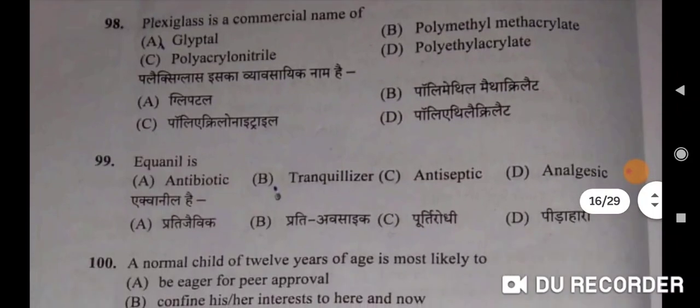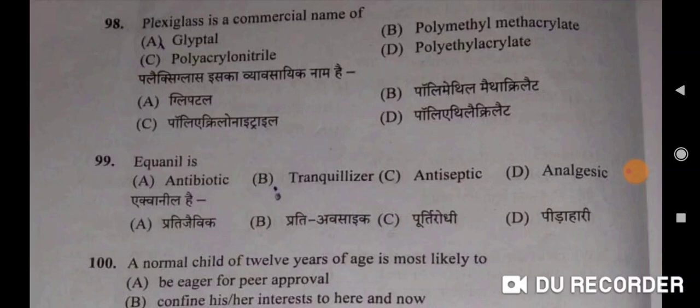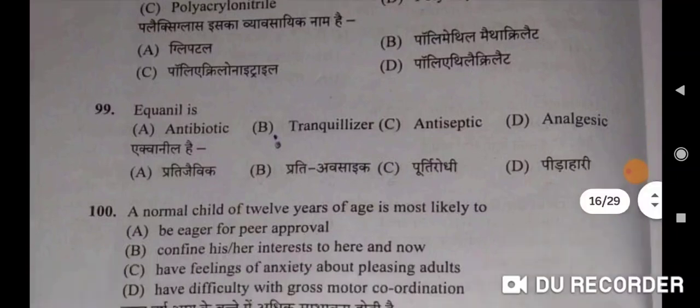Ninety-eighth: Plexiglass is a commercial name of polymethyl methacrylate — B will be the correct option. Ninety-ninth: Equanil is a tranquilizer — B will be the correct option. Equanil hai pratiyab saadik.